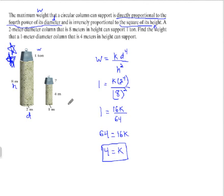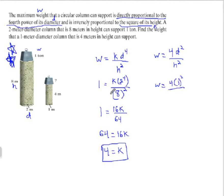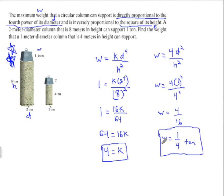Now that we have our constant of variation, we can use that with the smaller column. w is equal to 4 times d to the fourth over h squared. For the 1-meter diameter, 4-meter height column: w = 4 times 1 to the fourth over 4 squared = 4 times 1 over 16 = 4/16, which reduces to 1/4. So our smaller column can hold 1/4 of a ton.